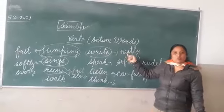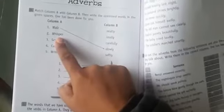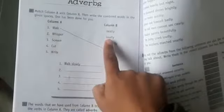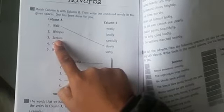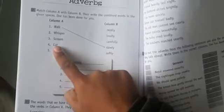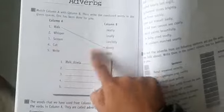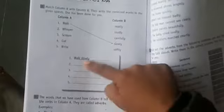Now I will discuss with you your homework. See, this is page number 63. This is your today's homework. You have to match column A and B. See, walk, how do you walk? Slowly. Whisper is action, whisper means speak in ears. How does he speak? Softly, carefully, loudly, neatly. Scream means shout, how do you do? Loudly. Cut, how do you cut? Carefully, neatly. And whisper softly. So you will match this one and you will write here.